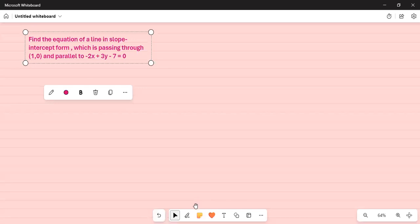Good afternoon friends. This is Dr. Nandy. Today we are going to talk about equation of a line. Find the equation of a line in slope-intercept form which is passing through (1,0) and parallel to -2x+3y=0.